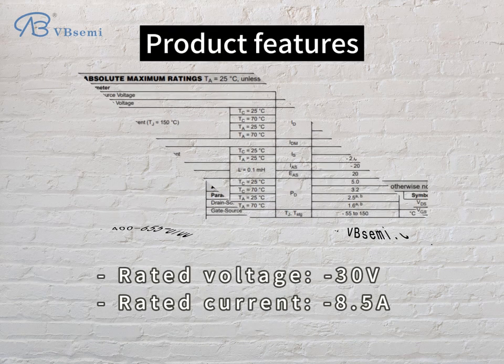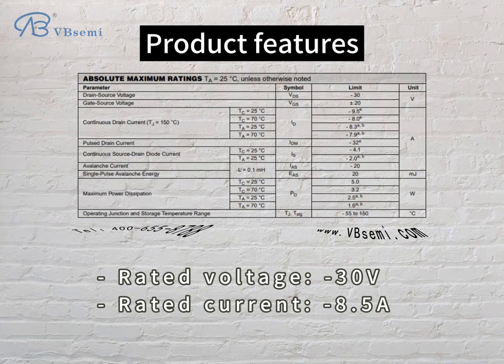The full model is FDS4935A-NL19VB. Its rated voltage is -30V and rated current is -8.5A.